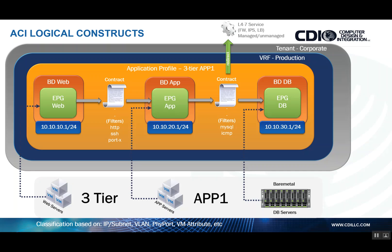Cisco ACI also allows the capability of layer four through seven service insertion. This means we can redirect traffic between endpoint groups to a firewall or a load balancer, or chain the actual redirection — so traffic goes through a load balancer first and then through a firewall. Very powerful. In traditional architectures, selectively inserting a hardware or virtual firewall in the path of any given application would require doing many different things to make it happen, and sometimes it's not viable. Cisco ACI radically simplifies this entire service insertion process.